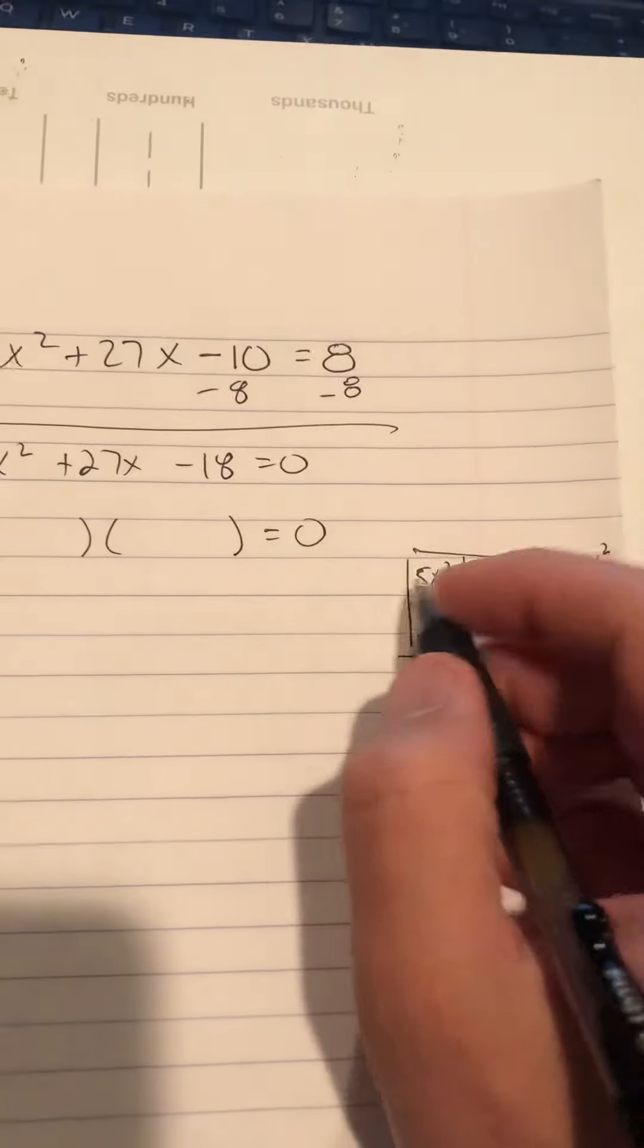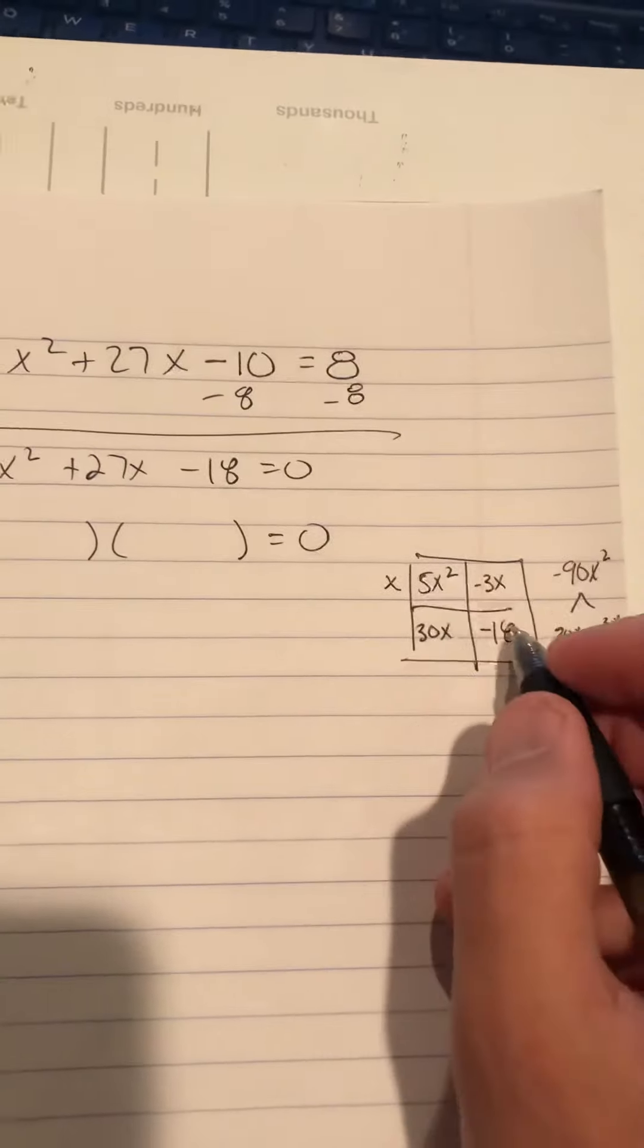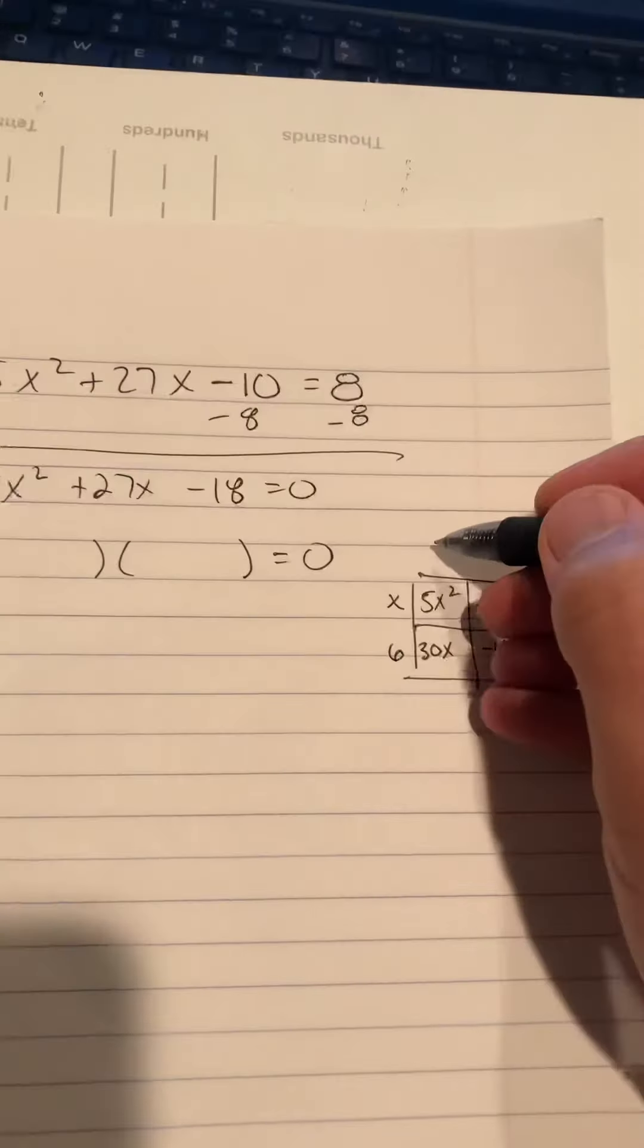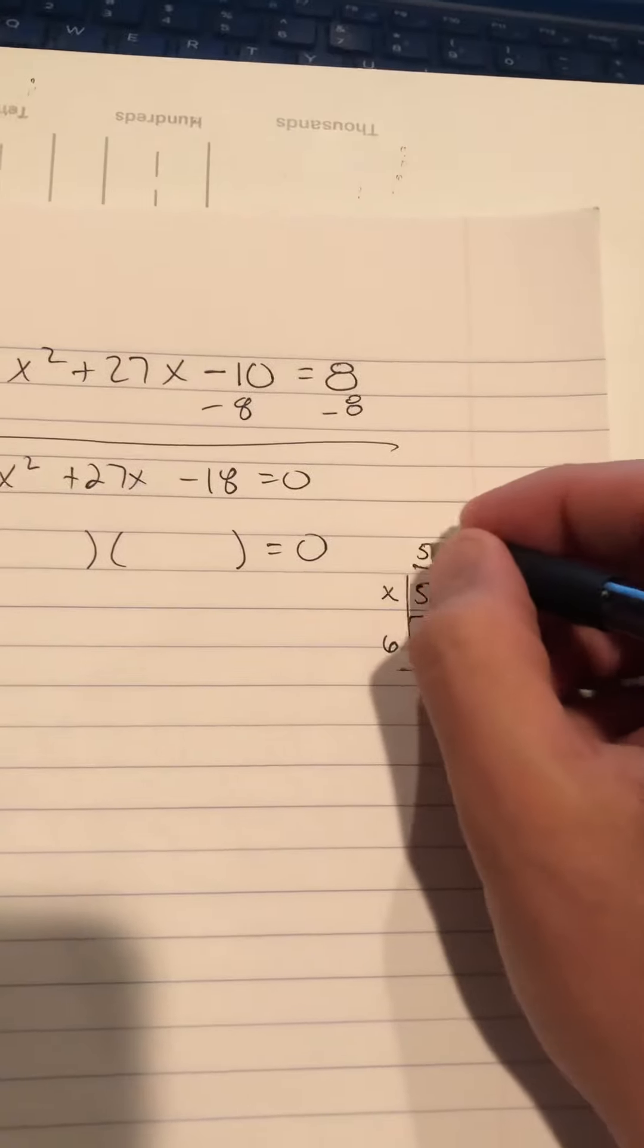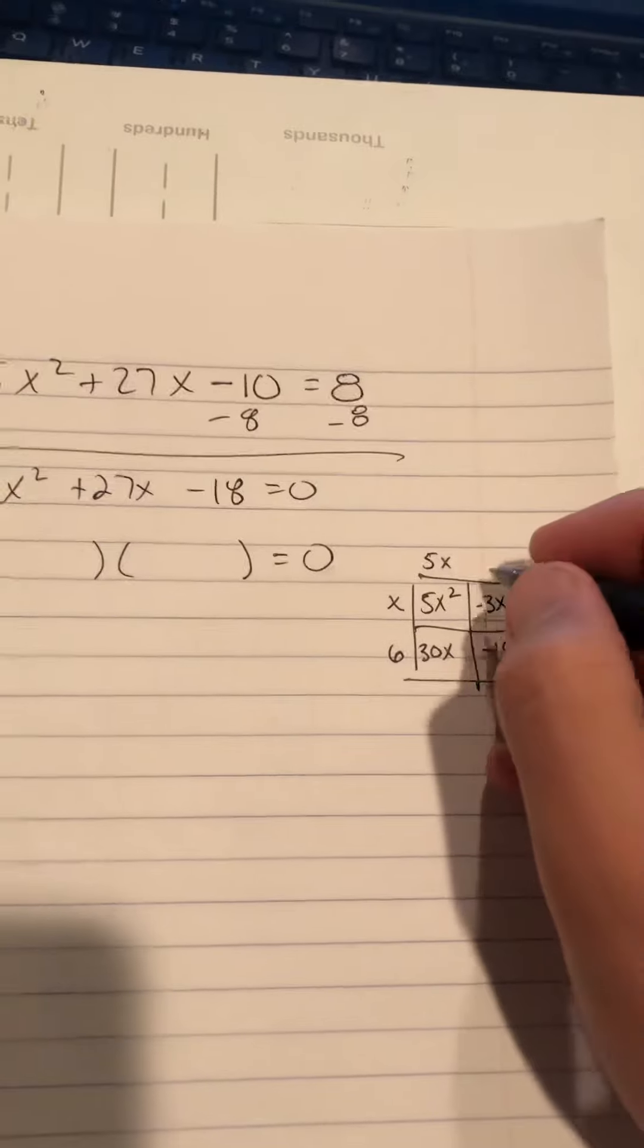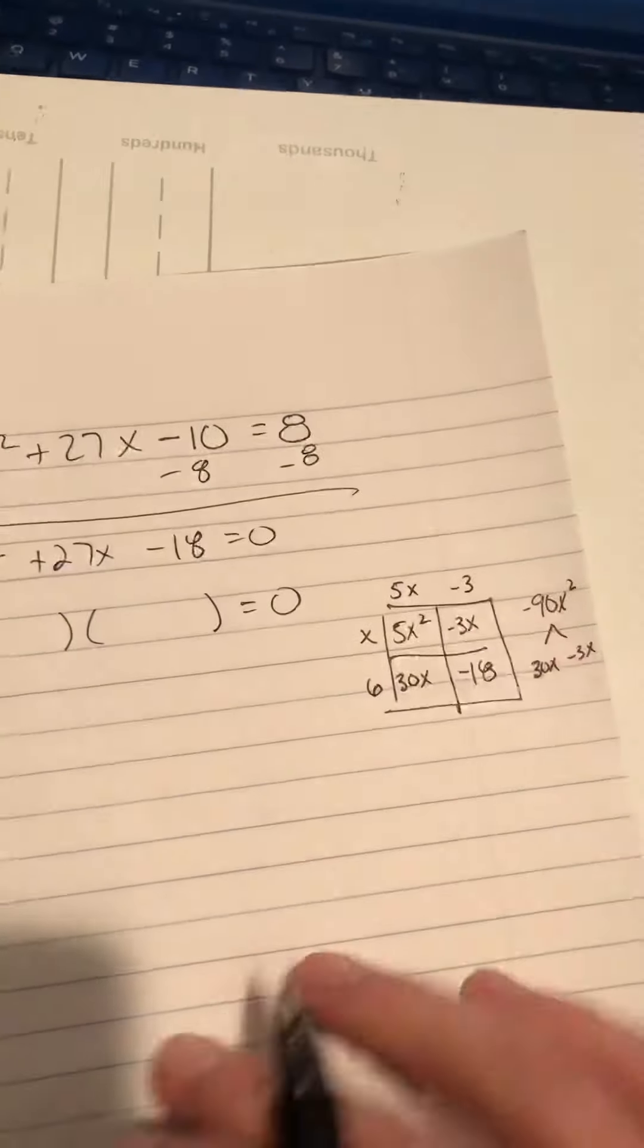I'll quickly run the GCF horizontally. These have an x in common, and these have a 6 in common. I'll quickly run the GCF vertically. These have a 5 and an x in common. These have a negative 3 in common.